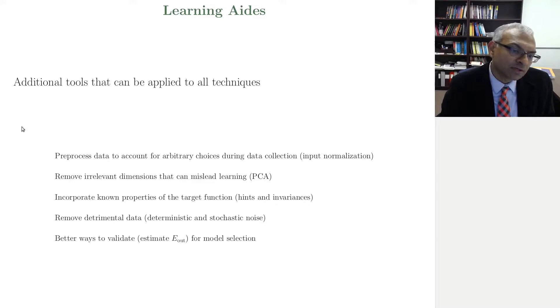We will focus starting with input preprocessing. How do you sort of account for arbitrary choices that could have been made during data collection? We'll be talking about techniques like input normalization. Algorithms that we develop typically expect the inputs in some standard form, and there's significant benefit to be gained from putting the inputs, the data, into that standard form.